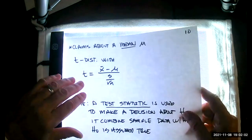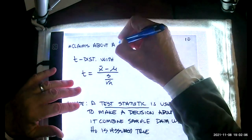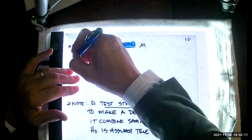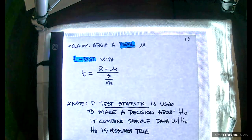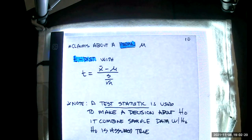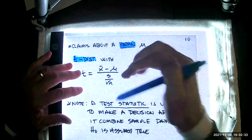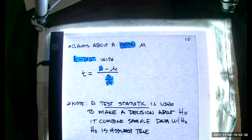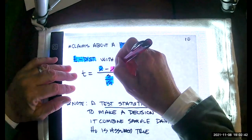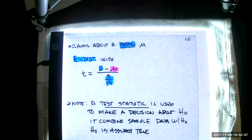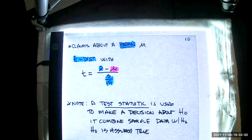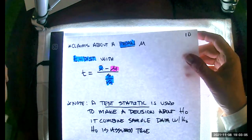If I have claims about a population mean mu, we use not the z-distribution but the t-distribution, just like we did in Section 7.2 when constructing confidence intervals for population mean values. We have a test statistic that combines sample data — x-bar, s, and n from our sample — and mu from the null hypothesis. This test statistic is what we use to make a decision about H-naught, and it runs through that basic conversion formula as a t-score.